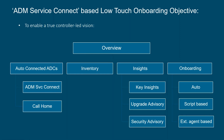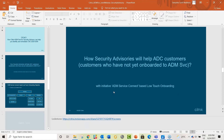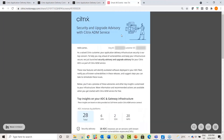The onboarding is aided by an automated and seamless workflow requiring minimal effort. This workflow is for customers who have not yet onboarded. You would receive this email if any of the two features — ADM Service Connect or Call Home — are enabled on your ADCs. The email gives insights on your ADCs and gateways: Security Advisory tells you how many ADCs are on versions with known CVEs.